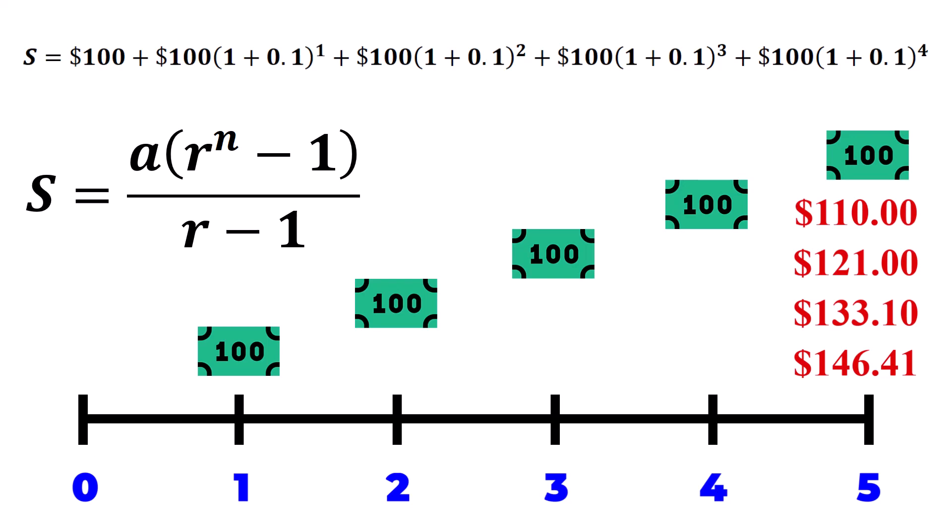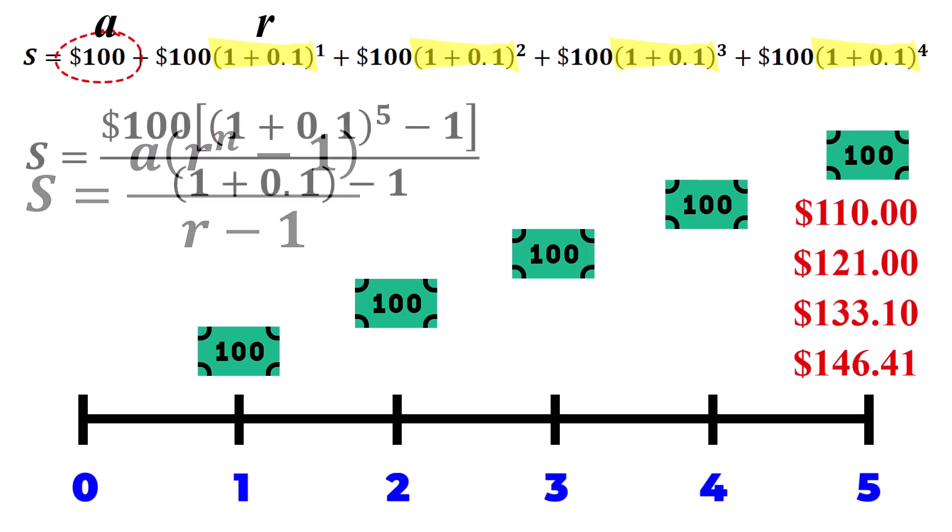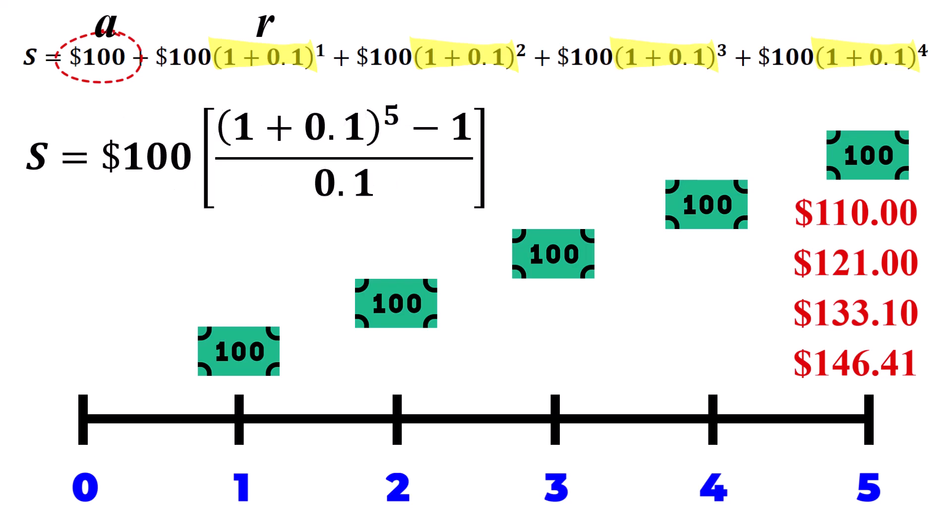In relation to our scenario, the initial value is 100, and the common ratio is 1 plus 0.1. Therefore, a must be 100, and r must be 1 plus 0.1. Substituting these values into the formula, along with n equals 5, we get an equation that is identical to when we use the ordinary simple annuity formula.